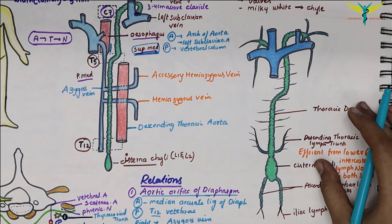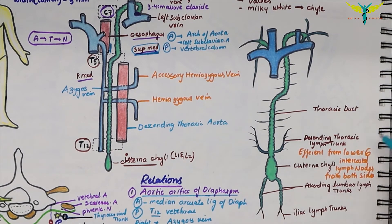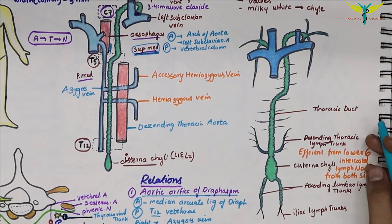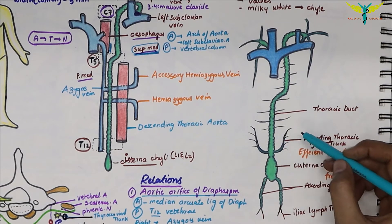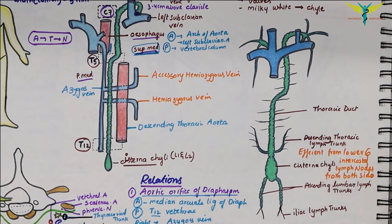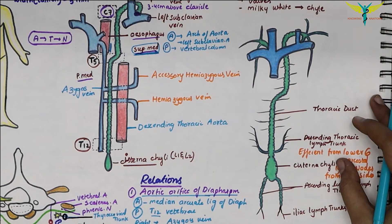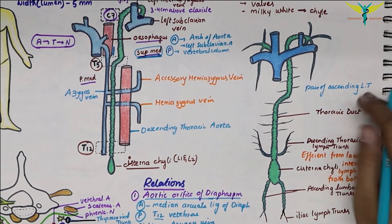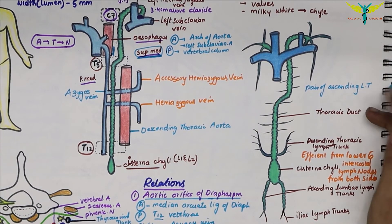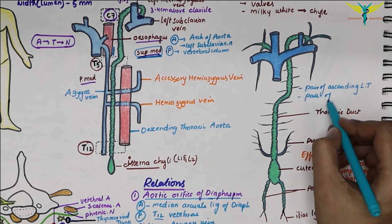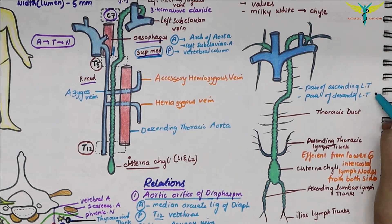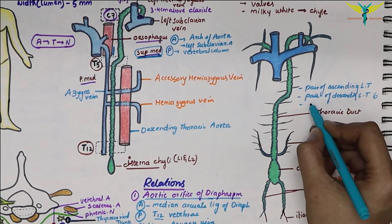In the thorax, a pair of ascending lymph trunks drains lymph from the upper lumbar lymph nodes (the para-aortic lymph nodes), and a pair of descending lymph trunks drains lymph from the posterior intercostal lymph nodes of the upper six spaces and the lymph vessels from the posterior mediastinum lymph nodes.